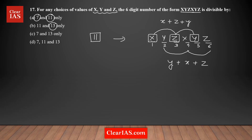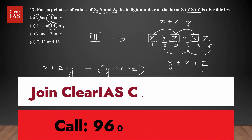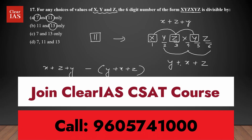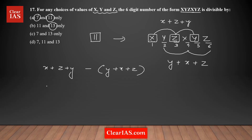Now take the difference of these two sums: (x + z + y) minus (y + x + z). We need to check whether this difference is a multiple of 11 or not.